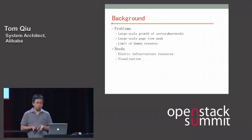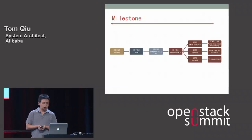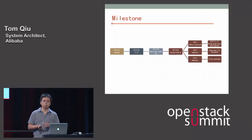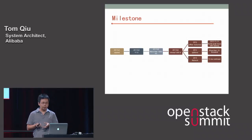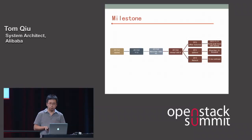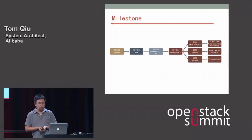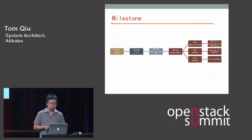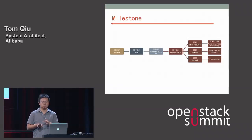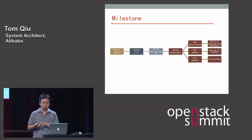These are our milestones. We started to design and implement the system in Q1 2011. In Q2 2011, we released the first version and deployed it to more than 1,000 virtual machines. In Q4 2011, we added integration with load balancers to the system, allowing it to scale quickly.